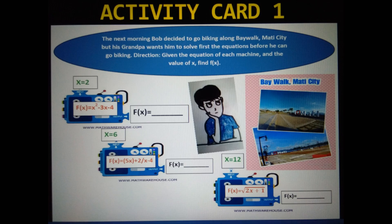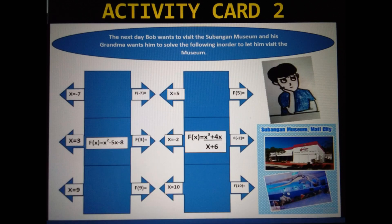Activity Card 1. The next morning, Bob decided to go biking along Baywalk, Mati City, but his grandpa wants him to solve first the equations before he can go biking. Direction: Given the equation of each machine and the value of x, find f of x.